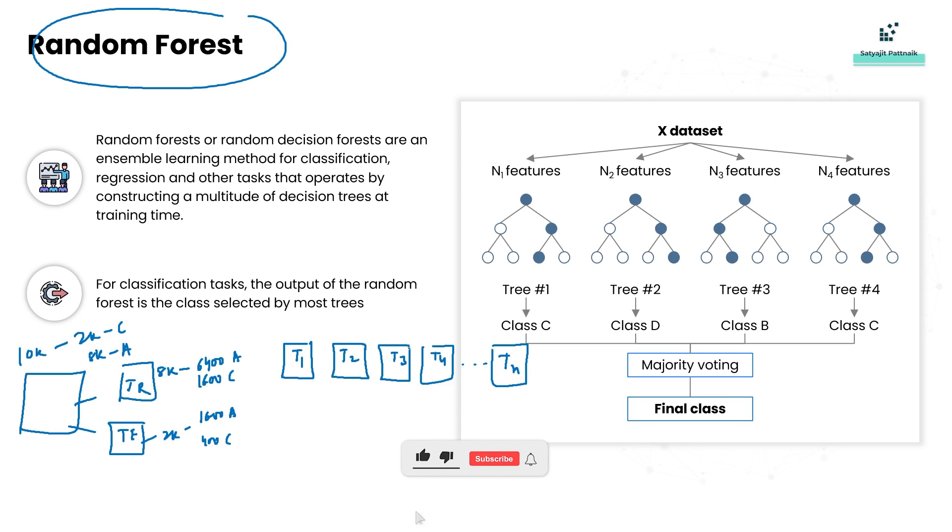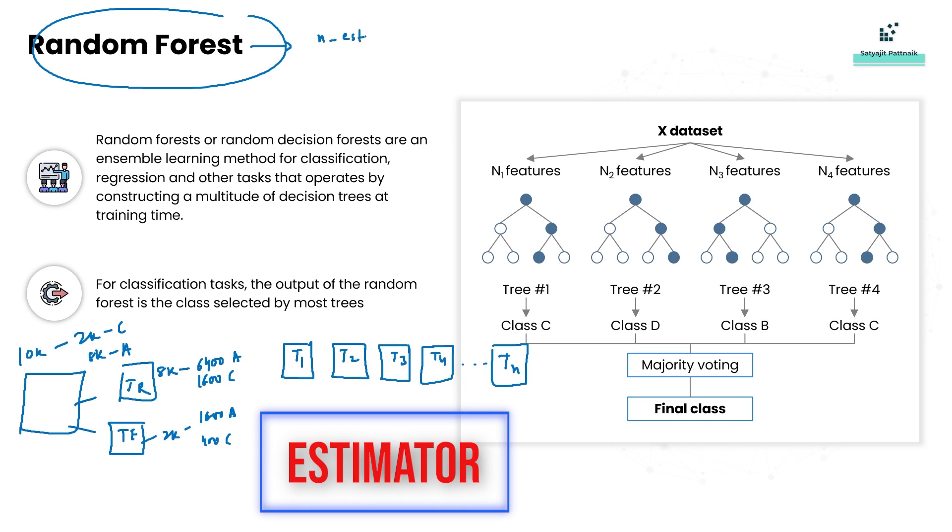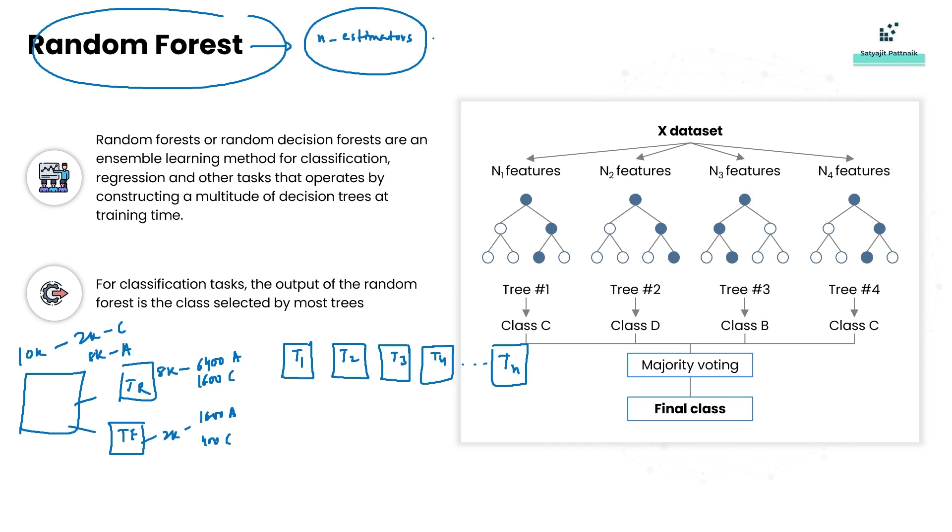How do we decide how many trees to create? When you call the random forest classifier, there is an argument called as n_estimators. By default this value is 100.